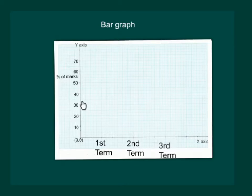And on the y-axis, we will mark percentage of marks starting with 0, and 1 cm equal to 10%. Since student A got 40% marks in the first term, so we know that our bar has to be somewhere here. Let us draw the bar. On drawing the bar, we get the figure like this.